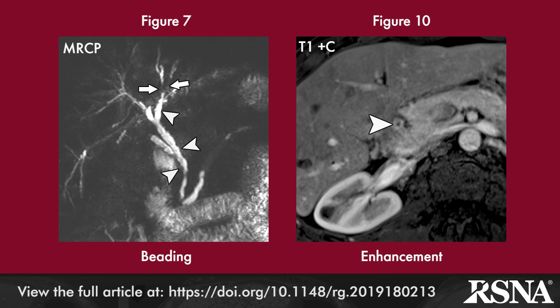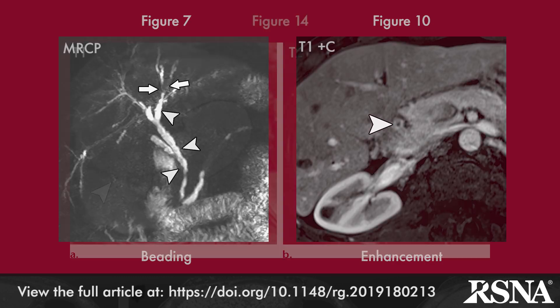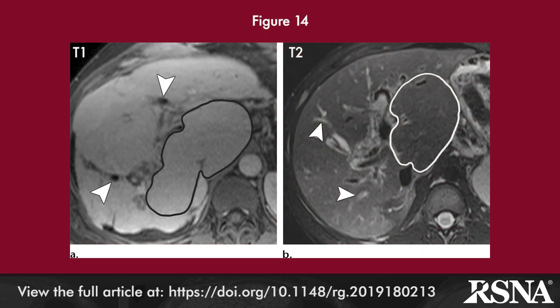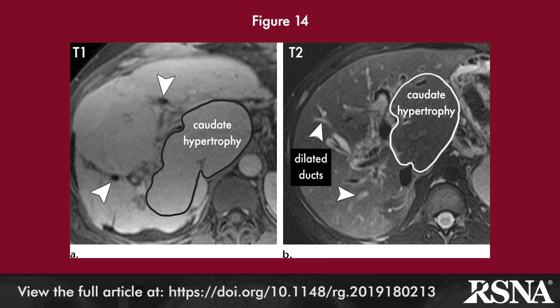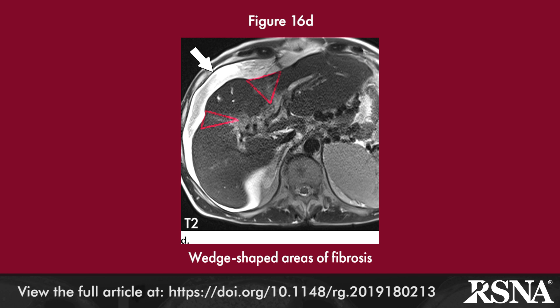Liver parenchymal changes are observed during the course of the disease and include a rounded or spherical shape to the liver due to atrophy of the left lateral and right posterior hepatic segments and hypertrophy of the caudate lobe. CT and MR features of PSC include peripheral wedge-shaped areas of atrophy.